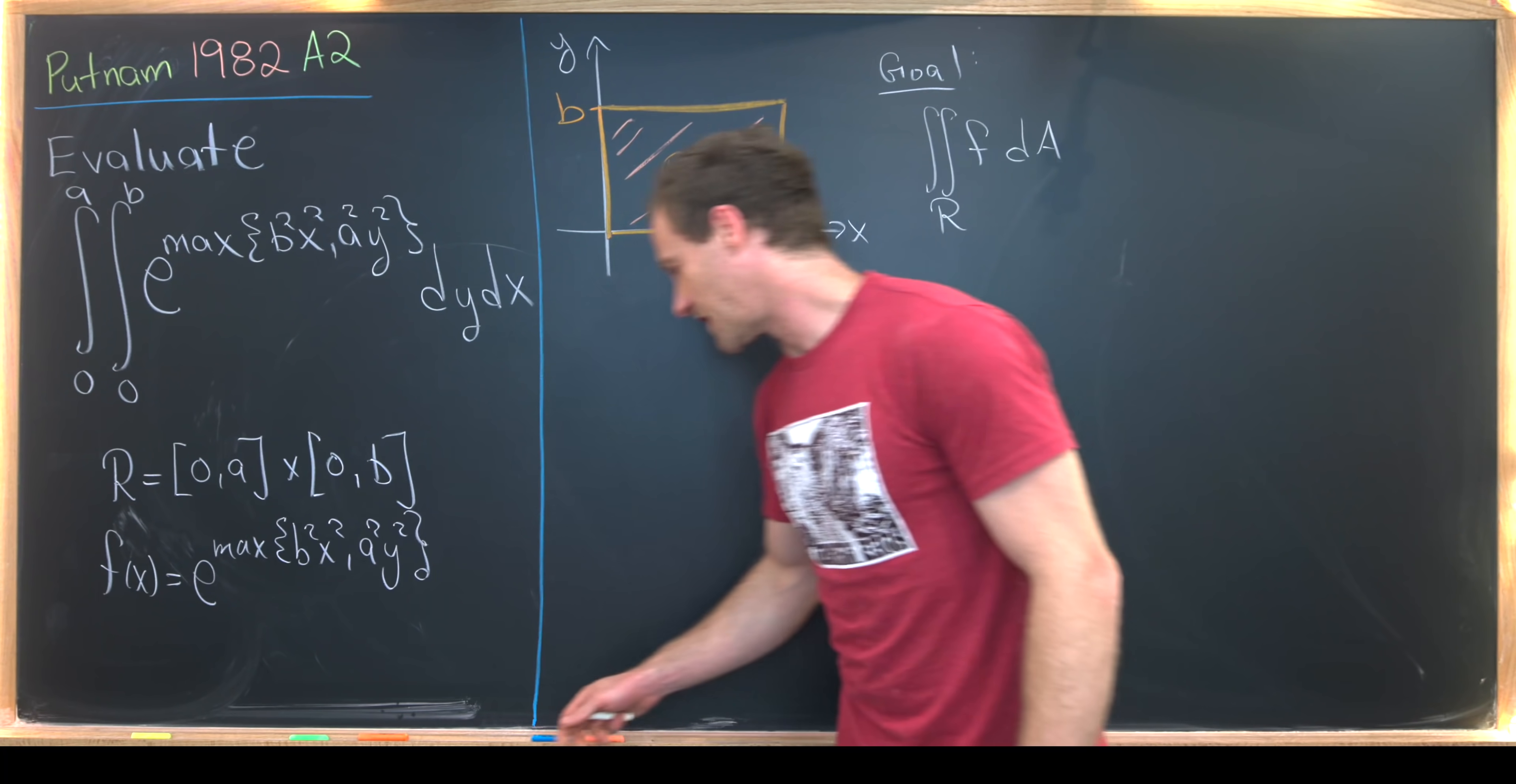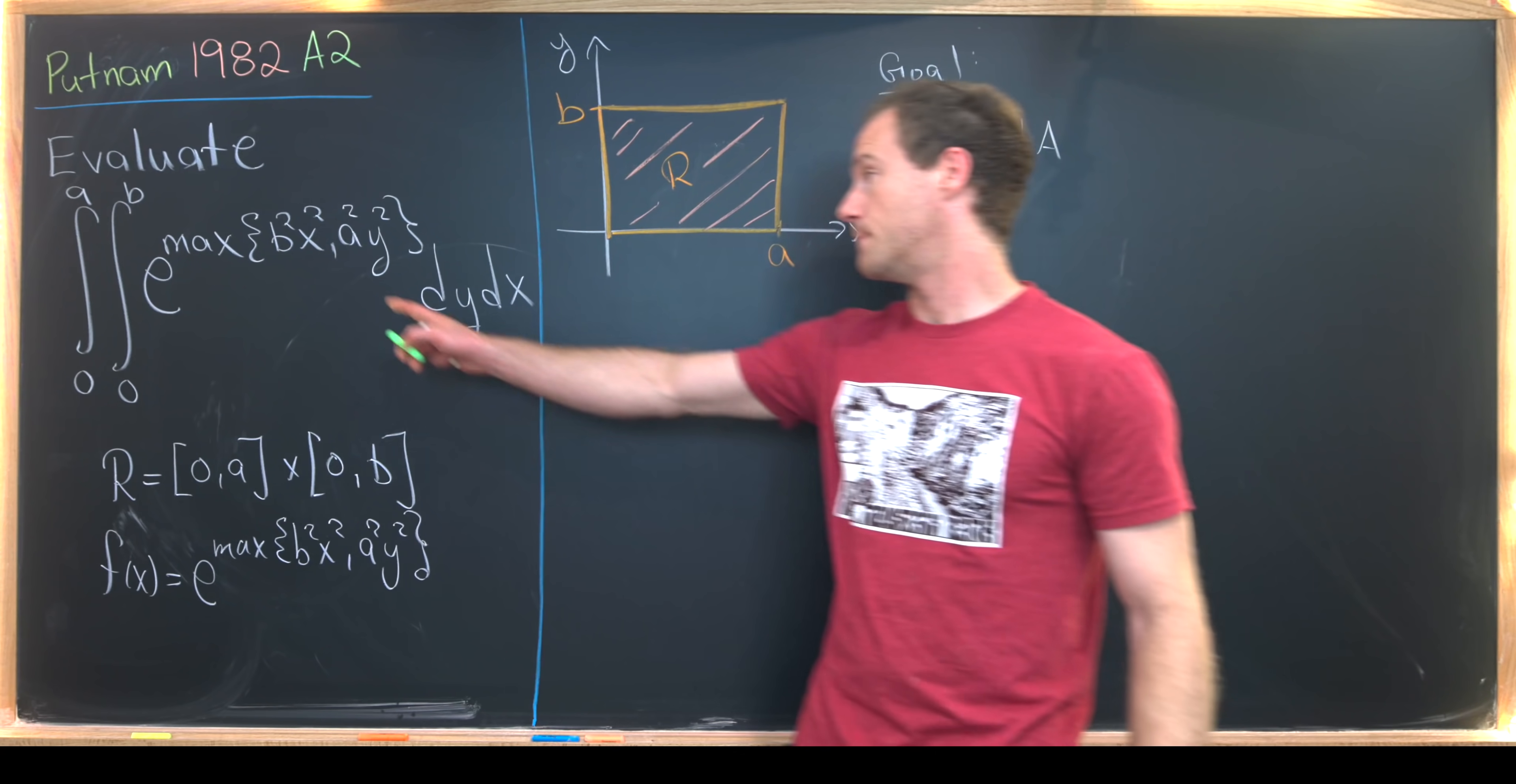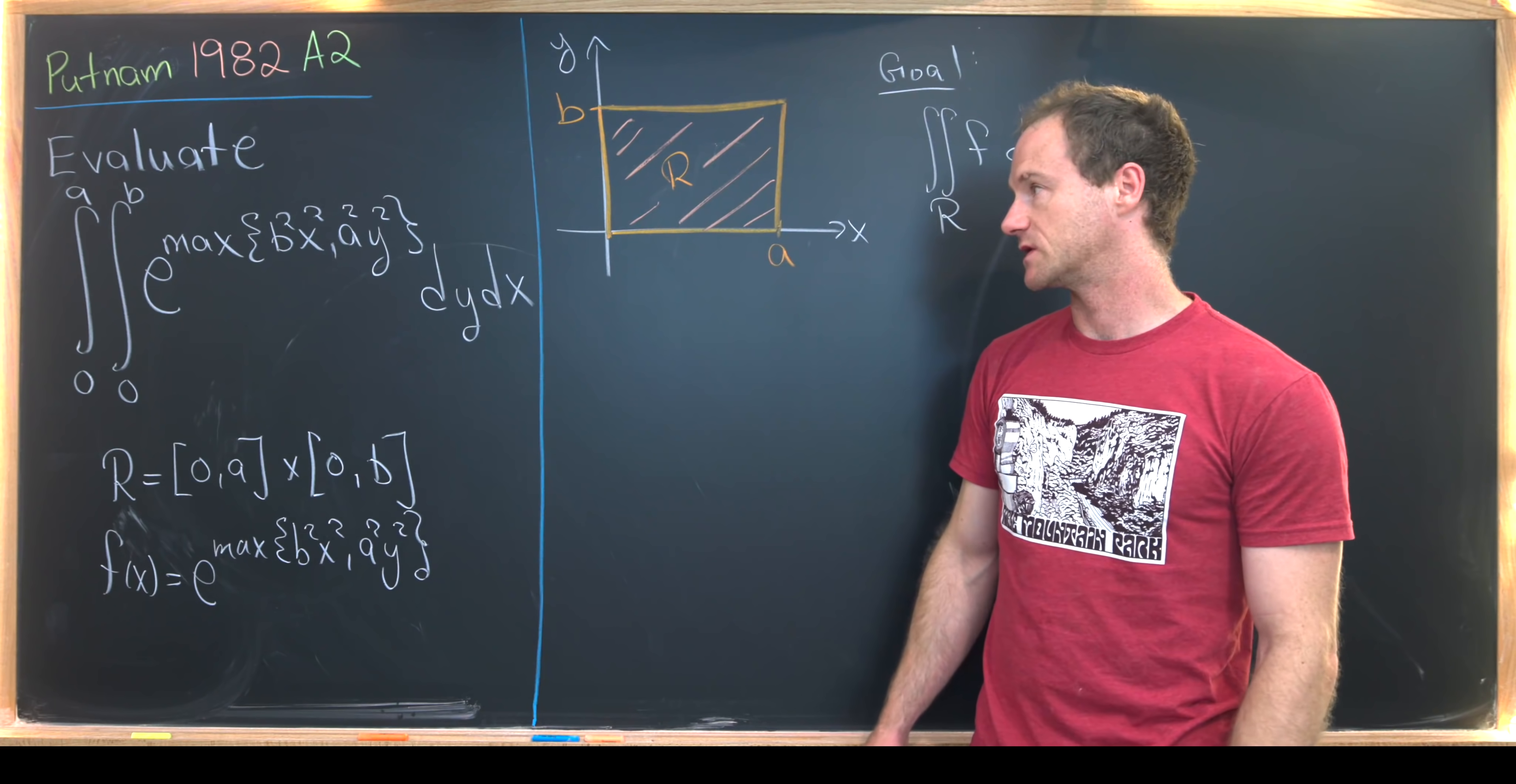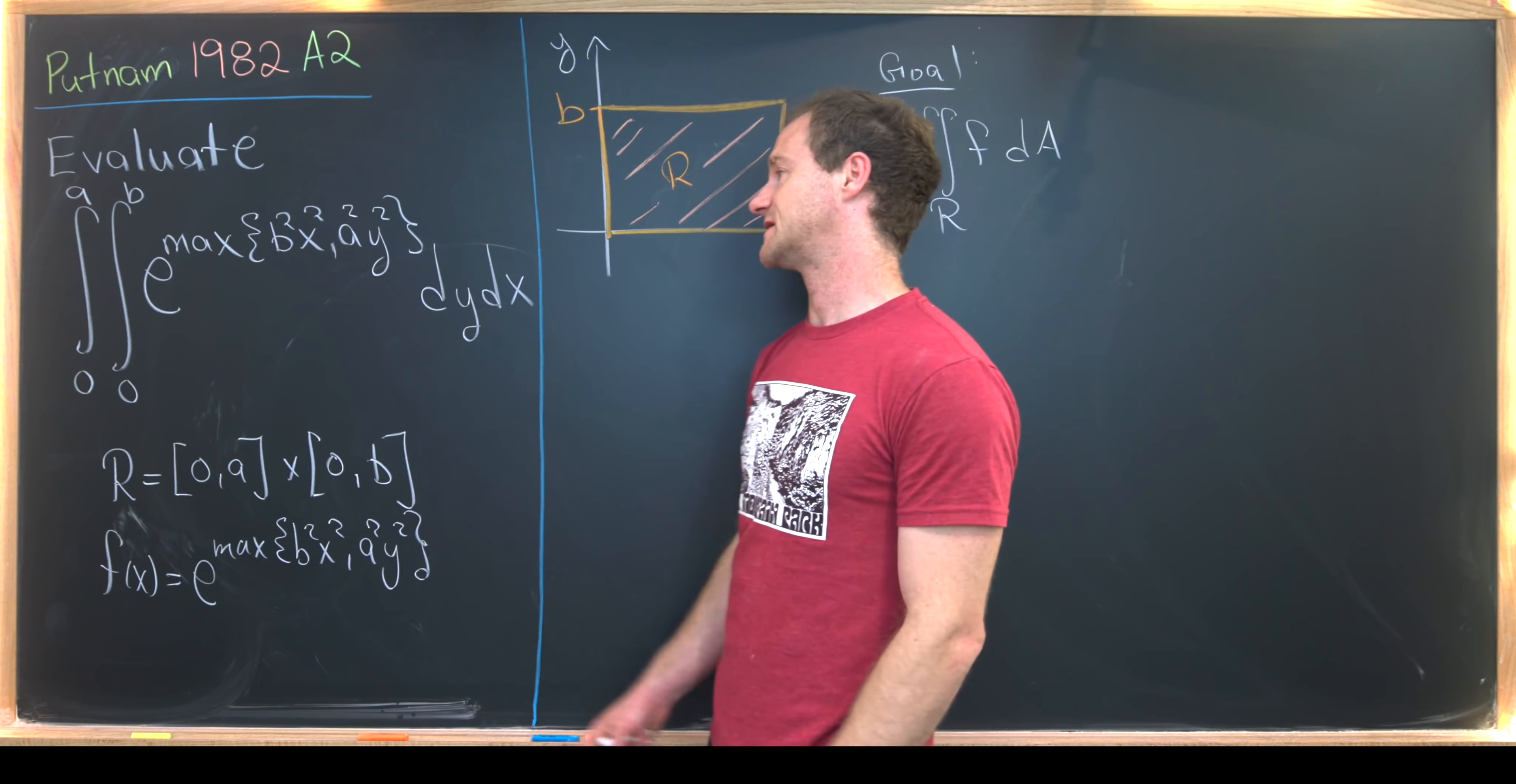Now I want to notice that there's kind of an obvious breakdown of this rectangle into two pieces, one piece where b squared times x squared is bigger, and one piece where a squared times y squared is bigger. So let's maybe look through that and notice that the important place to start off looking is where these are the same.